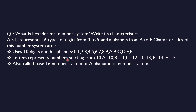In this system, letters represent numbers. A is 10, B is 11, C is 12, D is 13, E is 14, and F is 15. So it is also called the base 16 number system. You can also call it the alphanumeric number system, where alpha means alphabets and numeric means numbers.